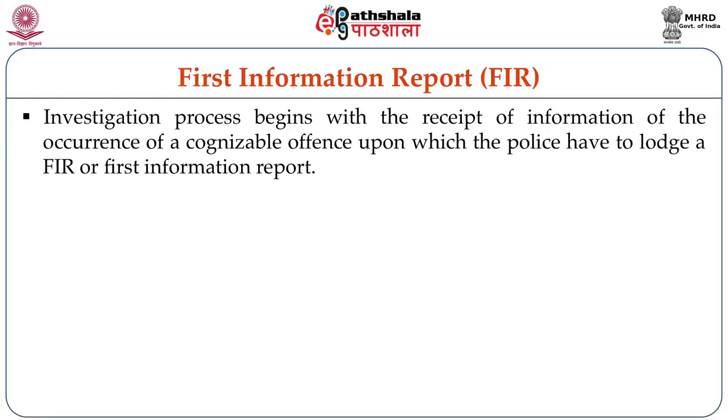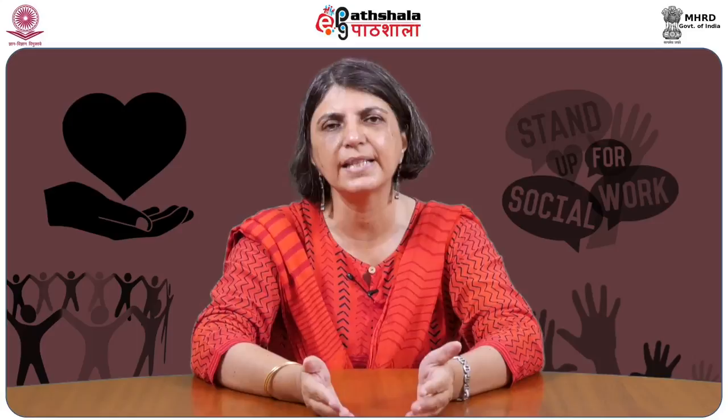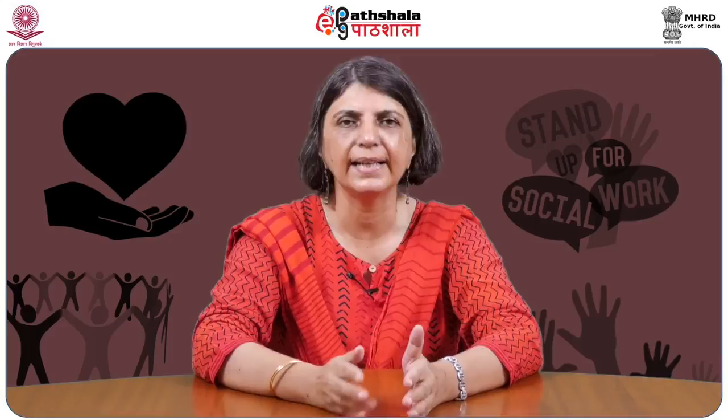We'll begin with how the investigation process goes on. The first step of investigation is the registration of an FIR. As we have stated already in an earlier module, in a cognizable offence, the police can investigate the case, arrest the accused, file a charge sheet and try the case against the accused. The first informant or the victim is only a witness in this case.